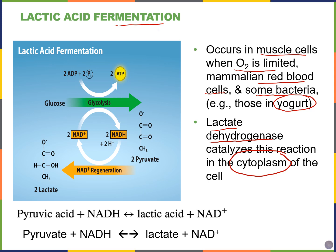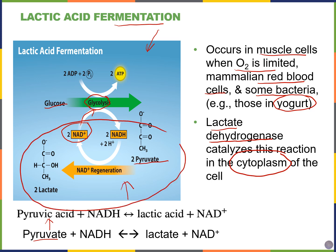Looking at the diagram, glycolysis is when we take glucose and chop it in half to make two pyruvate molecules — pyruvate is also known as pyruvic acid. If I don't have oxygen, I need to regenerate NAD+. During lactic acid fermentation, pyruvate is converted into lactic acid, also known as lactate. This is a redox reaction: NADH is oxidized to form NAD+, and pyruvate is reduced.